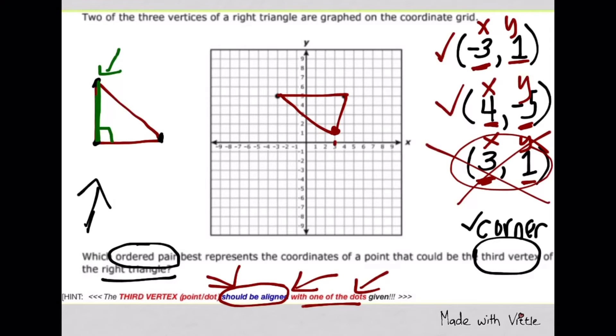Just remember, the third corner should be aligned with one of the dots in order for them, when connected, to form a right angle. If it's not aligned with one of the dots on either X or Y, then it's not going to form a right angle.